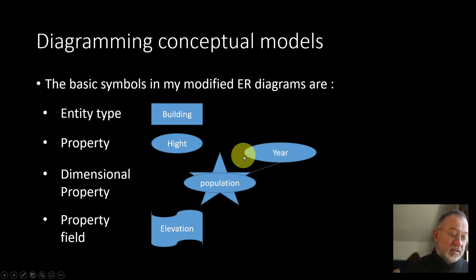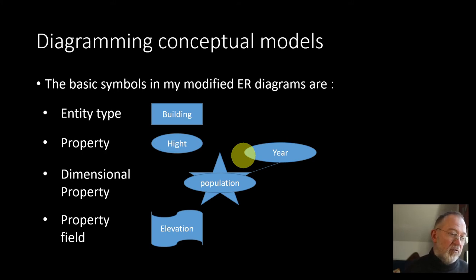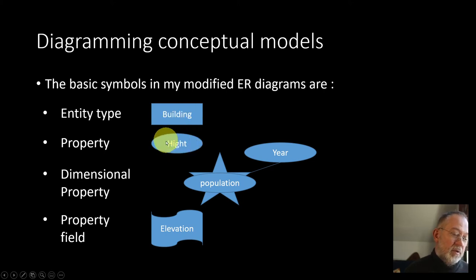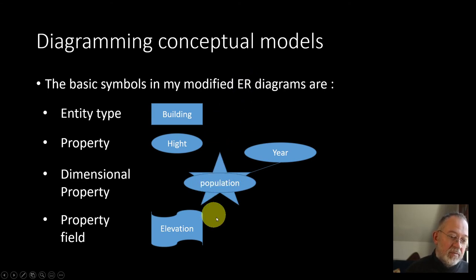So let's start with ER diagrams. ER stands for Entity-Relation, and 'relation' is a term for how tables are represented — they're called relations in the relational data model. An entity type could be a building; a property of an entity could be height or species. Specifically with geospatial data, we also have what comes from what we call a star diagram.